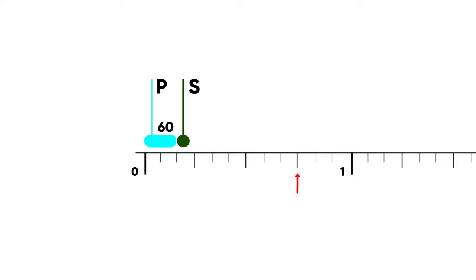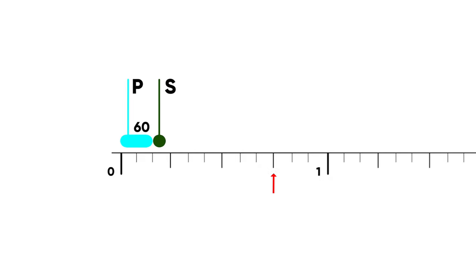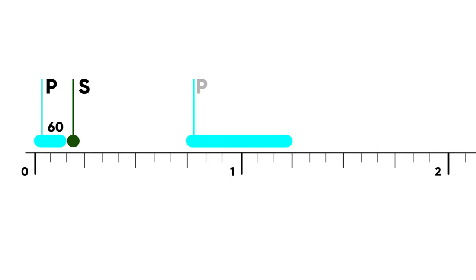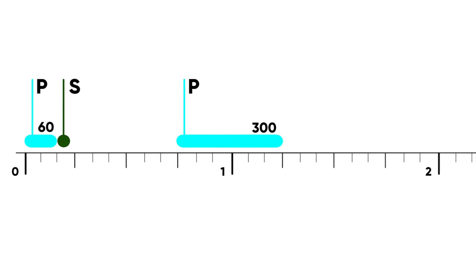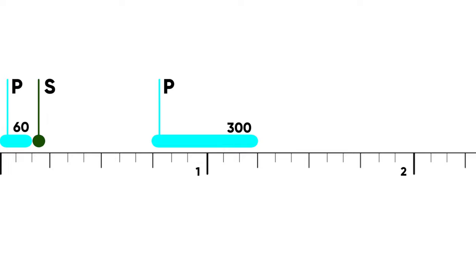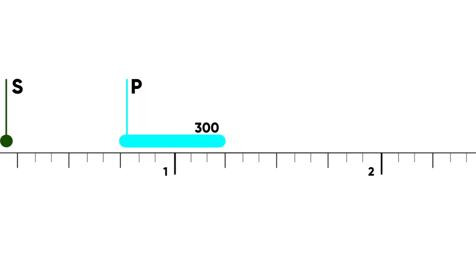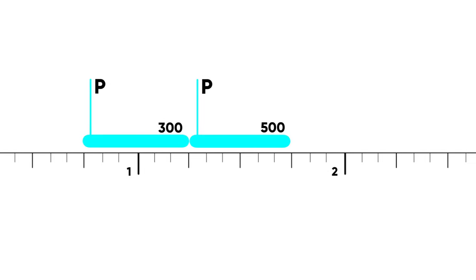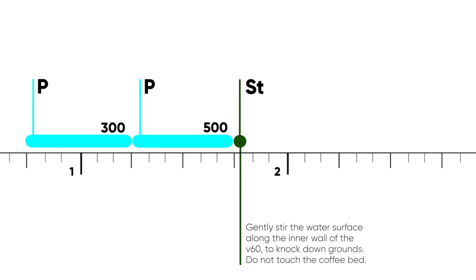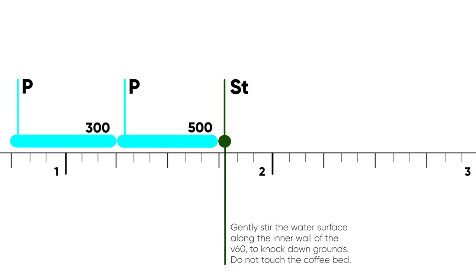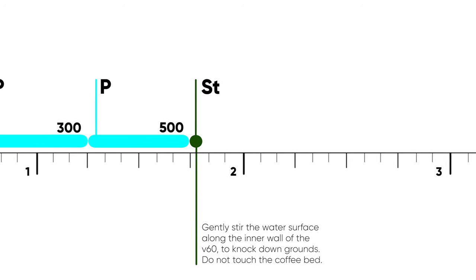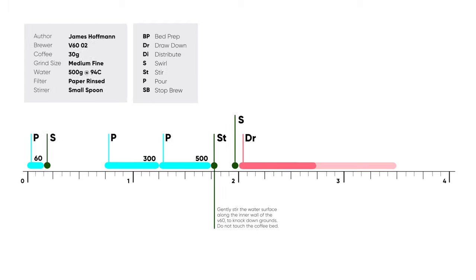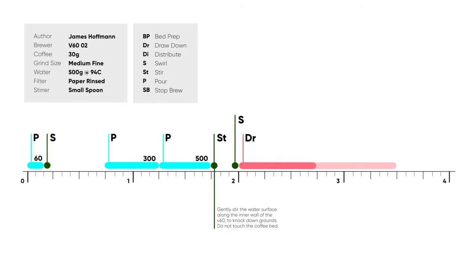Now leave the timeline blank until the 45 second marker. No event indicates a wait, and so it becomes pretty clear that we've done a 45 second bloom. Add a 30 second pour with a quantity or scale reading of 300 grams. What this means is that by 1 minute and 15 seconds we should have poured an additional 240 grams of water over and above the 60 grams used for the bloom. Next, we add the final pour with an end scale reading of 500 grams. Add a stir right after this pour with a little note that tells you what kind of stir this is. Then after a 15 second wait, we add the final swirl and finish off the recipe with a drawdown that ends anywhere between 2 minutes 45 seconds and 3 minutes 30 seconds. That's it — we're done. It's that simple.